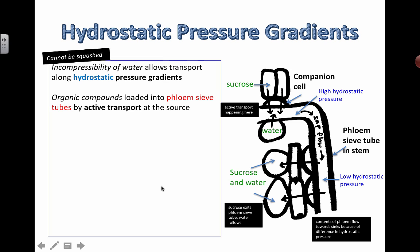Organic compounds are loaded into the phloem sieve tubes by active transport at the source. If active transport is happening here, what we're doing is taking sucrose and actively moving it into the phloem. This area immediately just got a lot more sugary or filled with solutes. If that area becomes more salty - meaning more solutes - then by the definition of osmosis, water will move to where it is saltier. So when water moves in, you end up with a lot of water moving in here to follow this sucrose that was actively transported in.